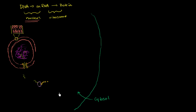Those proteins can float around the cytosol and be used in whichever way is appropriate. But how do you get protein outside of the cell, or embedded in the cell membrane? We know that cells communicate in many ways and produce proteins for other cells, for use in the bloodstream, or whatever it might be. That's what we're going to focus on in this video.